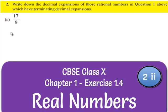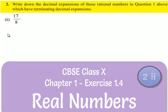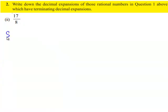Now let us move on to the second rational number that has a terminating decimal expansion. The rational number is 17 upon 8. To find its decimal expansion, first we shall write the denominator of the given rational number as a product of its prime factors.